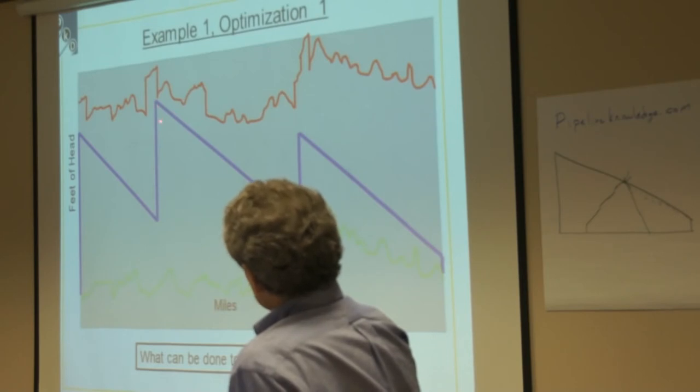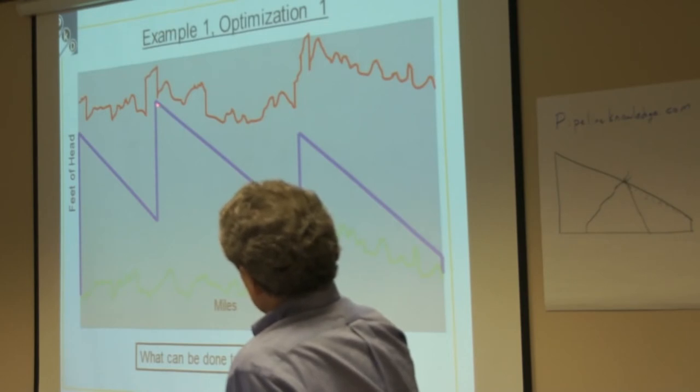You know the constraint - one of the constraints here is you can't go any higher there. So the first challenge is, how do you, without going any higher here, how do you have more pressure loss per mile? You've got to be going into this station with less pressure. Then you can come out of this station with more pressure, and you can come out of this station with more pressure.